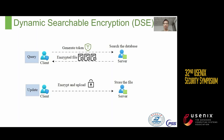For the motivations, let's first review what DSE is and how it works. DSE involves the interaction between client and server to retrieve encrypted files containing specified keywords. It mainly encodes two functions: the query function and the update function. In the query, the client generates tokens based on keywords and sends them to the server, which retrieves matching encrypted files and sends them back. The client then decrypts the files locally to complete the query.